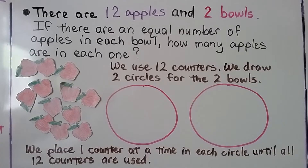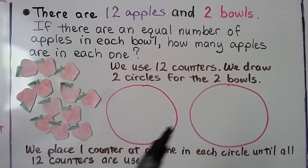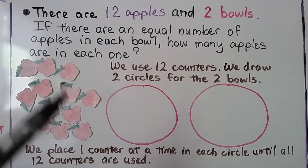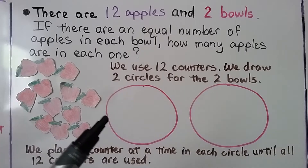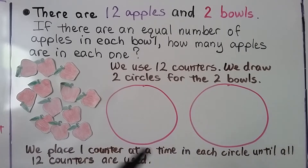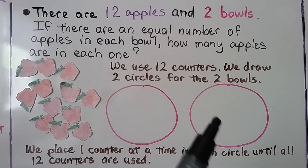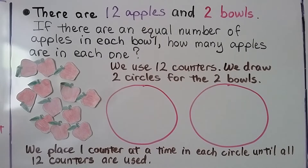There are 12 apples and 2 bowls. There's an equal number of apples in each bowl. How many apples are in each one? We use 12 counters — we counted out 12 of them. We can draw 2 circles for the 2 bowls, and we place 1 counter at a time in each circle, taking turns, until all 12 counters are used.